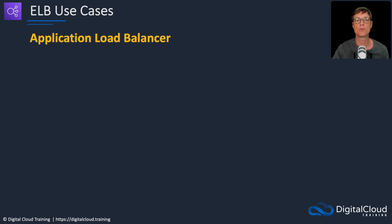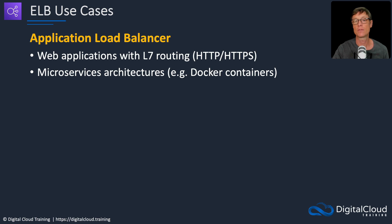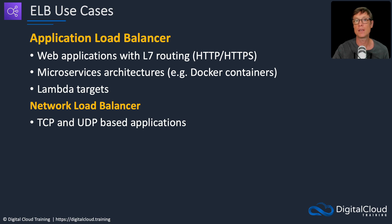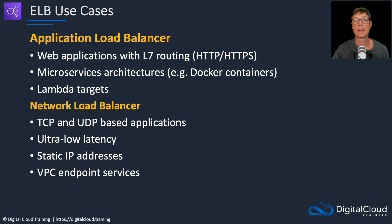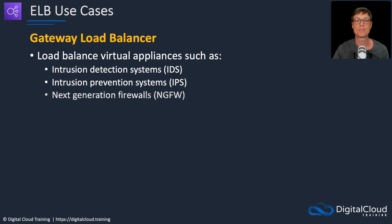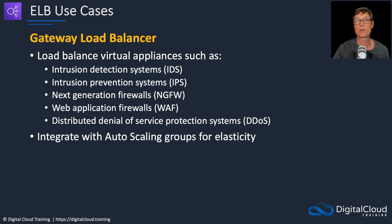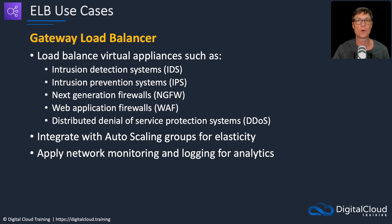For use cases: use the ALB for web applications requiring layer seven routing, microservices architectures such as Docker containers, and Lambda targets. Use the NLB for TCP and UDP based applications where you need ultra low latency, may need static IP addresses, or are working with VPC endpoint services. For the gateway load balancer, use it for load balancing virtual appliances such as intrusion detection systems, intrusion prevention systems, next-generation firewalls, web application firewalls, and DDoS protection systems. It also integrates with auto scaling groups for elasticity, and supports network monitoring and logging for analytics.